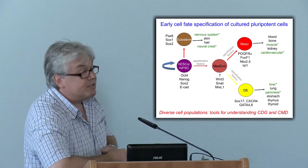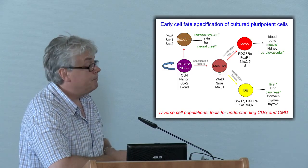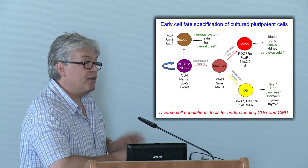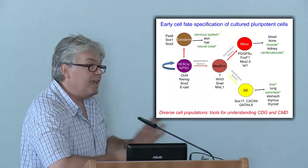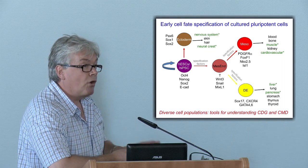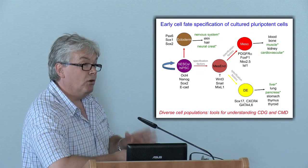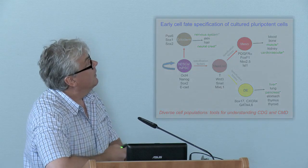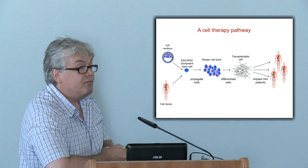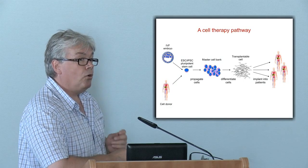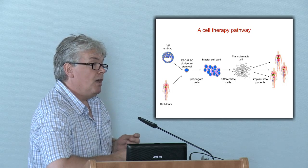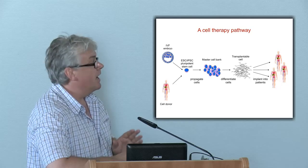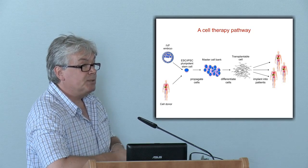The second class of pluripotent stem cells I'm going to talk about today are called induced pluripotent stem cells. They're initially derived from adult patients or any sort of patient, and then the cells are reprogrammed back to a pluripotent state. Pluripotent cells have the ability to differentiate into all body types, which makes them a very broad utility stem cell type for investigating a wide range of developmental and disease processes.